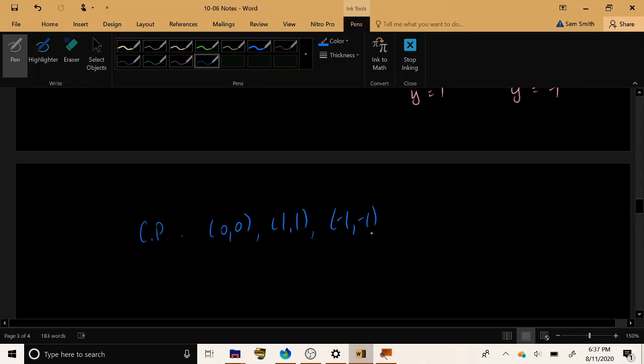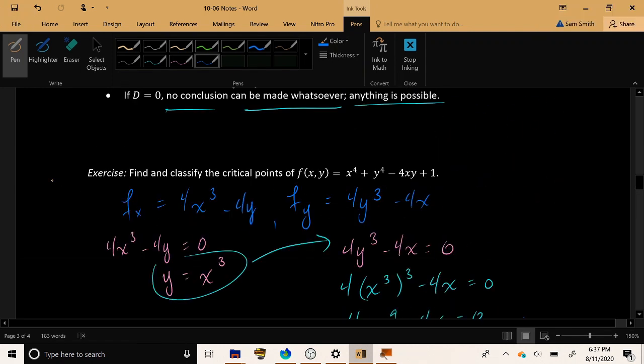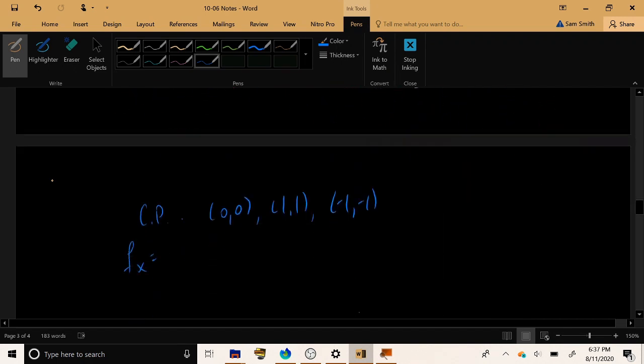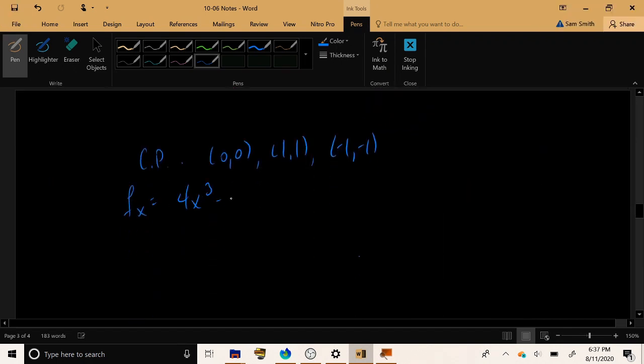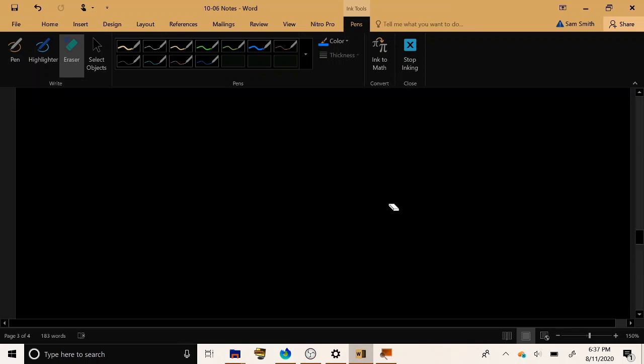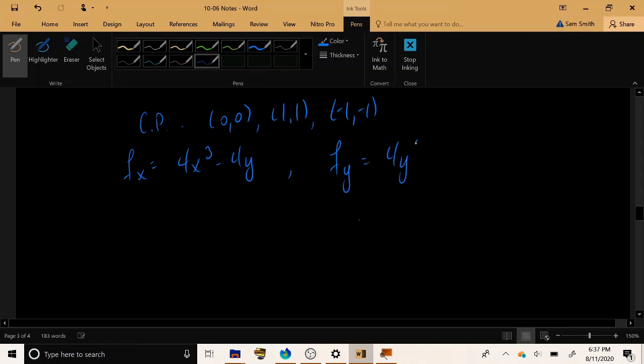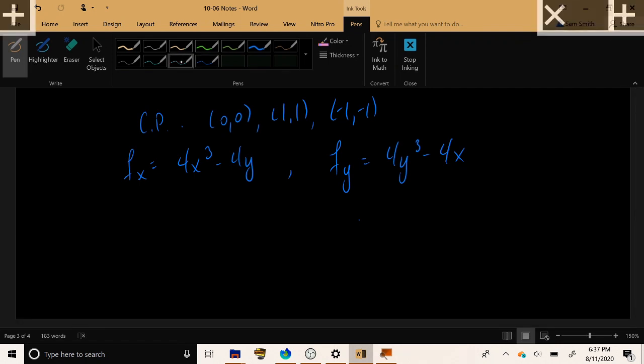Now, in order to classify these points, we're going to use the second derivative test, which will require us to find all the second derivatives. So let's just quickly remind ourselves what f sub x and f sub y were. 4x cubed minus 4y and 4y cubed minus 4x. And let's go about and find all the second order derivatives.